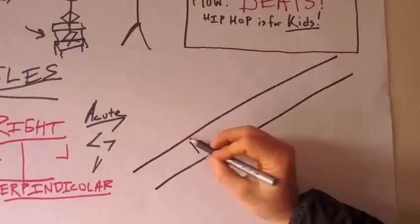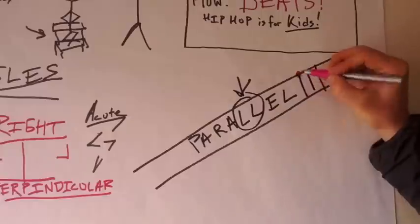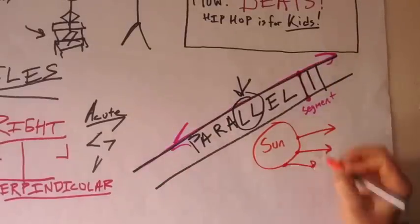If two lines don't touch, we call it parallel. Like railroad tracks or the letters double L. Segments end, but lines go on forever. And if it only goes one way, it's a ray. That's clever.